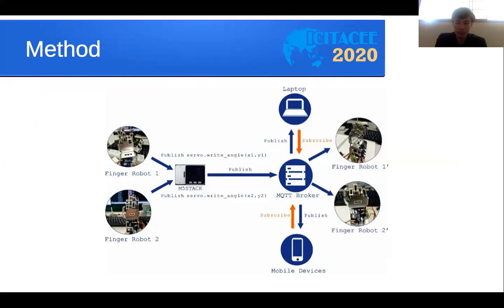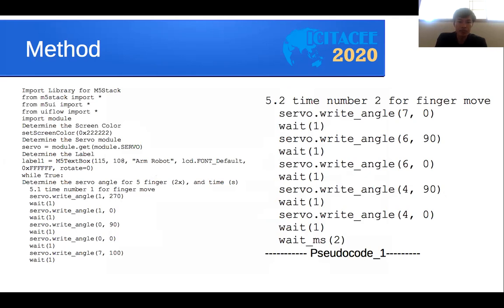This shows the movement of the robot — from the M5 Stack to the MQTT broker — which requires Python programming to recognize the angles of the robot. Using ESP32, data goes to the MQTT broker, and from the MQTT broker, the research can get the publish and subscribe data packets, which are then sent from device to the finger robot after any movement or programming change.